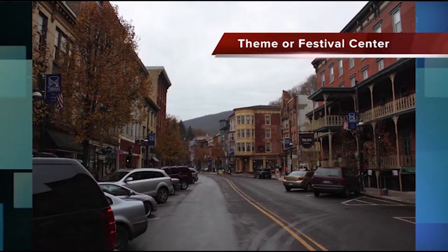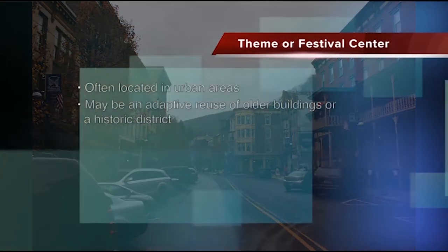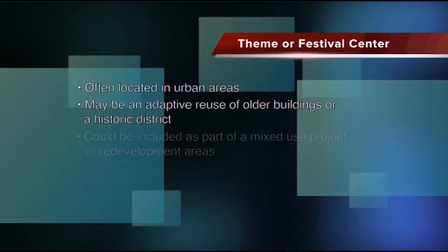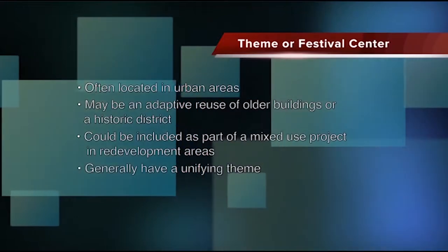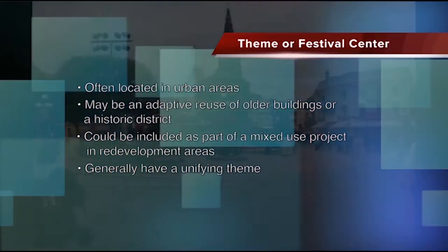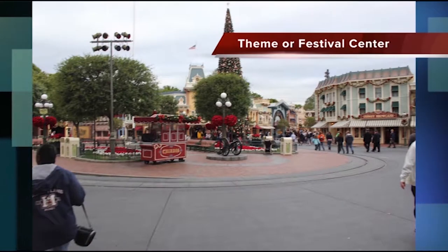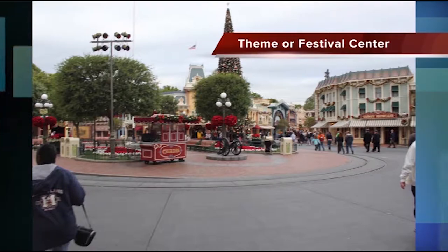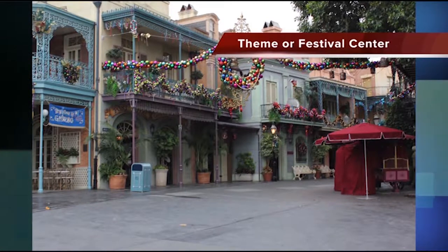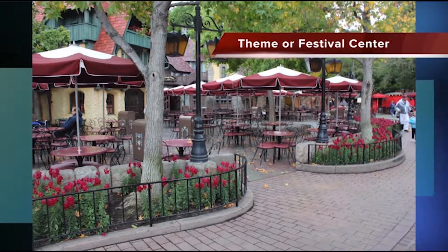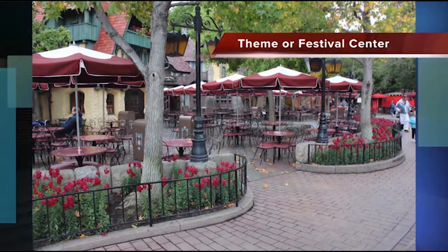A theme or festival center is often located in urban areas and may be an adaptive reuse of older buildings or a historic district. Theme centers may be included as part of a mixed-use project in redevelopment areas. Theme or festival centers generally have a unifying theme carried out by the individual shops and often their merchandise, which may be reflected in the center's architectural design. A common element of these centers is entertainment, although some rely solely on the shopping experience. Although theme centers are generally targeted at tourists, they may also attract local customers. Examples include San Francisco's Fisherman's Wharf, Sacramento's Old Town, Redondo Beach's Horseshoe Pier, Santa Monica's Third Street Promenade, and City Walk at Universal Studios.